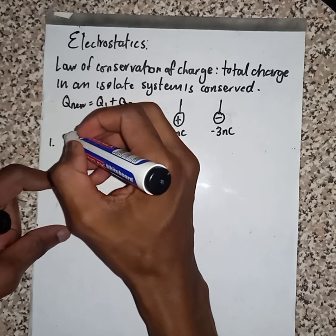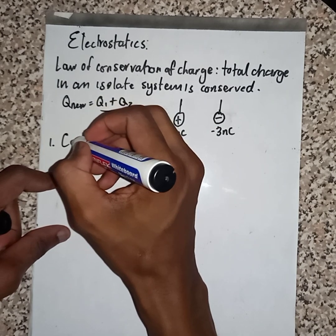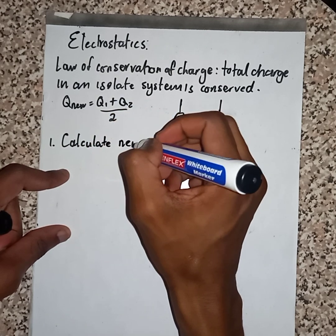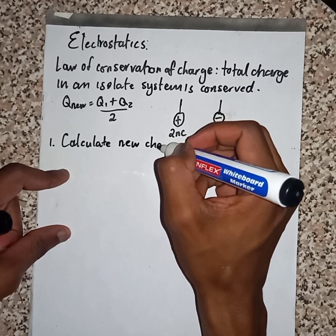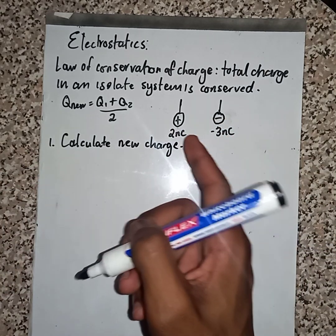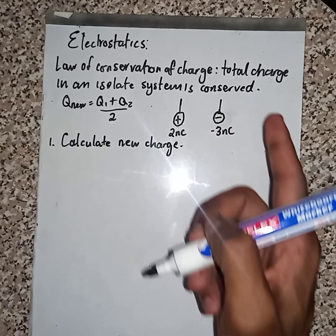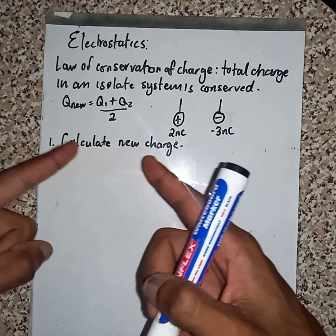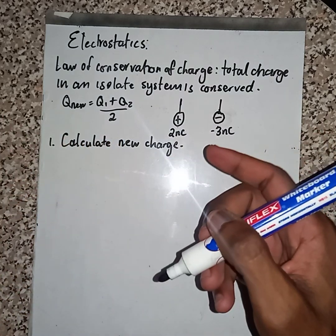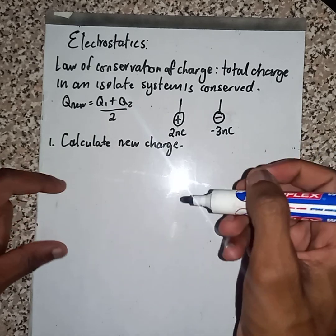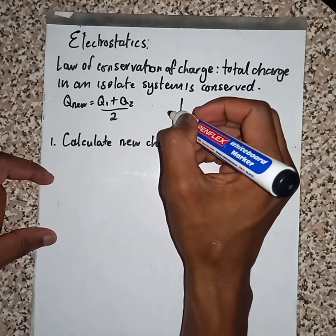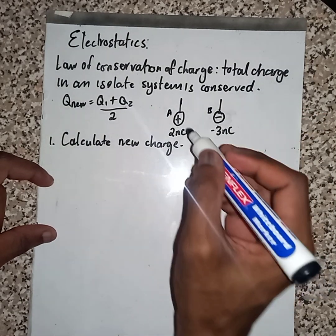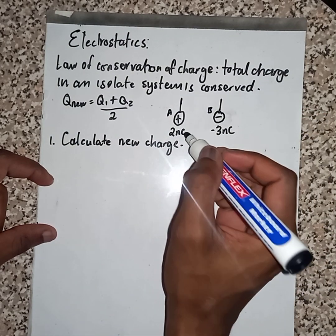The first question: calculate the new charge, if we say these two charges attract each other and after a while they repel. How are you going to determine that? Use this formula. Here we have A and here we have B. We must convert nano into Coulombs.